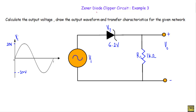In this video I will show you an example of a Zener diode clipper circuit. I will show you how to calculate the output voltage, how to draw the output waveform, and transfer characteristics for this given network. We are applying an alternating voltage of 20 volt positive maximum and negative maximum at minus 20 volt. The Zener diode has a breakdown voltage Vz equal to 6.2 volt and the series resistance is equal to 1 kilo ohm. The output voltage is taken across the output terminals.